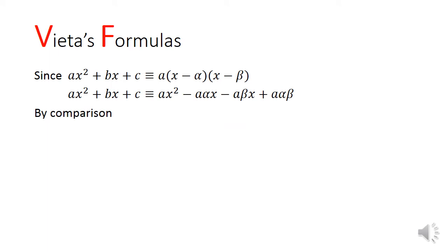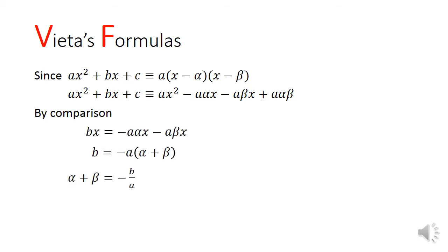Now let's get back to Vieta's formulas. Since we know that ax squared plus bx plus c, the general form of a quadratic, can also be expressed in its factorized form as a times of (x minus alpha)(x minus beta), we can expand the factorized form and compare the coefficients on both sides. The coefficients of the x terms: on the left side we have b, on the right side we have negative a times of (alpha plus beta). Rearranging this, we get the sum of roots, alpha plus beta, to be equal to minus b over a. If we compare the constant terms, on the left side we have c, and on the right-hand side we have a times of alpha times beta. That tells us the product of roots alpha beta equals c over a.